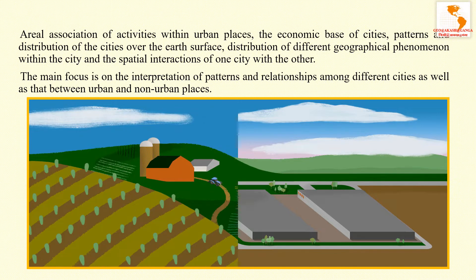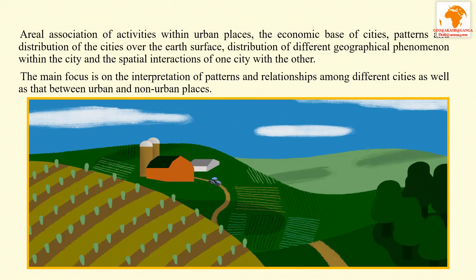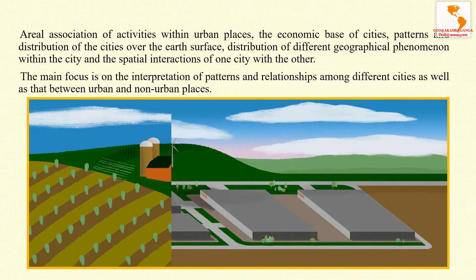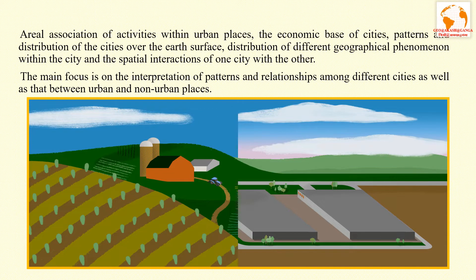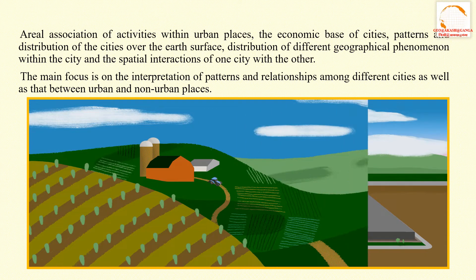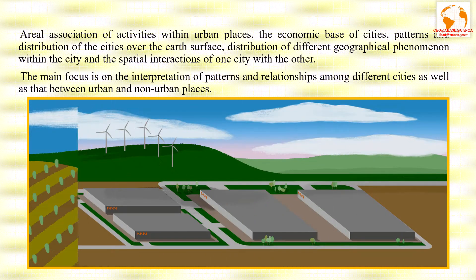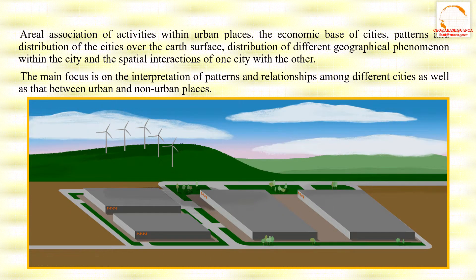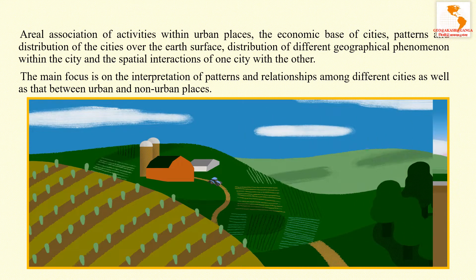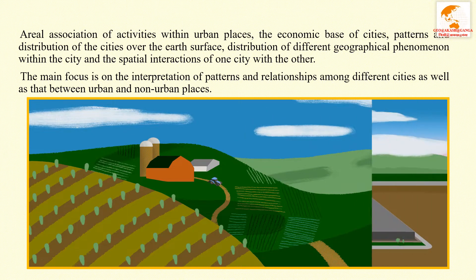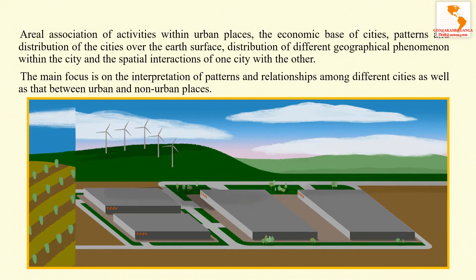In other words, it can be said that urban geography has a distinctive focus with a primary concern on the study of association of activities in urban areas, association of land use and their features. The main focus is on the interpretation of pattern and relationship among different cities as well as between urban and non-urban places.